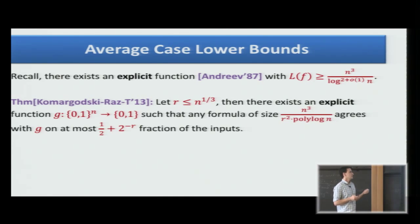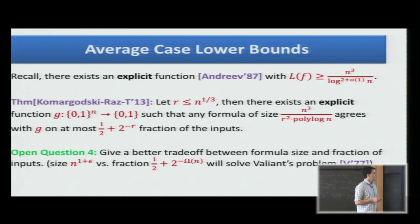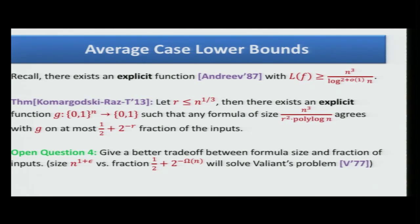We use a different construction than the Andreev construction, but it is inspired by that. An open question regarding this work is to give a better trade-off between the formula size and the fraction of inputs. A particular set of parameters which is interesting is to get to size n to the 1 plus epsilon, and fraction half plus 2 to the minus omega n. If you will get this, then this will be very good because this will solve the Valiant's problem, and it will give us a function which cannot be computed by linear size circuits and logarithmic depth. This is an open question for about 40 years now.